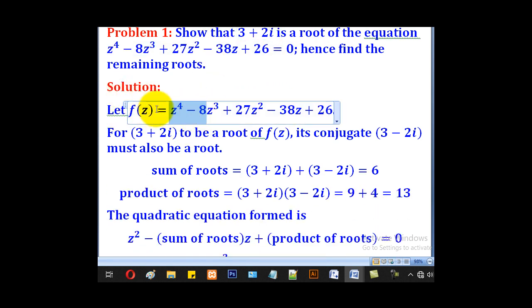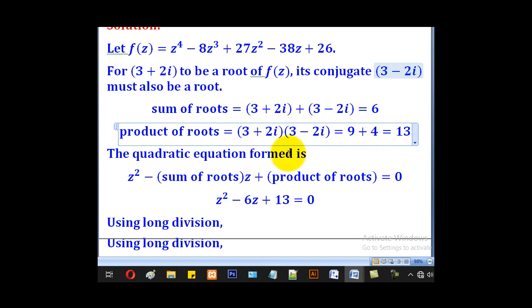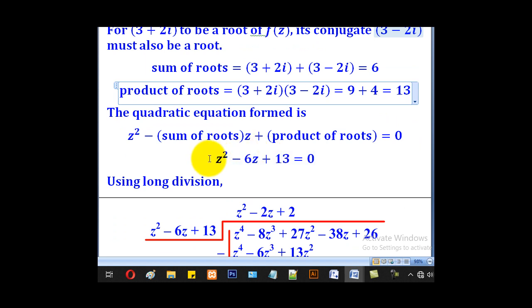We shall first relate the equation to f(z). For this to be a root, then its conjugate must also be a root. So we are going to first get a quadratic equation for these two roots. Sum of roots will be this plus that to give you 6, and product of roots will be that times that. These are complex and its conjugate, so we shall come up with 3² + 2², which is 9 + 4 to give you 13. So the equation having those two roots is z² - 6z + 13 = 0.